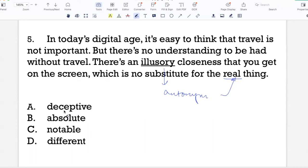And my options are deceptive, absolute, notable and different. So deceptive works. Deceptive is something which is not real, something which is designed to fool you. So the closeness that you experience on screen is illusory, it's deceptive, it's not real.